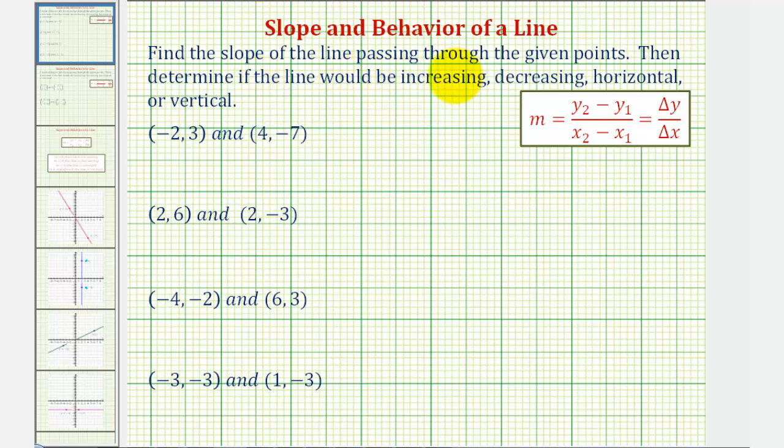We want to find the slope of the line passing through the given points, then determine if the line would be increasing, decreasing, horizontal, or vertical. Given two points on a line, the slope is equal to the change in y divided by the change of x.